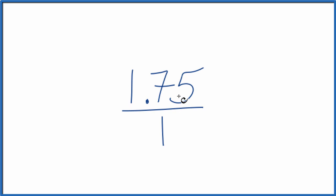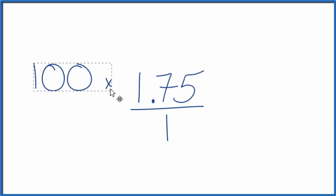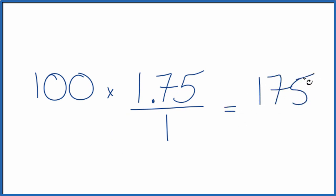If we could get 1.75 to a whole number, that would make this a lot easier. So because there are two decimal places, if we multiply this by 100, like this, 100 times 1.75, that'll give us 175. And that's a whole number.